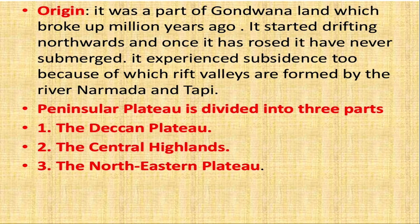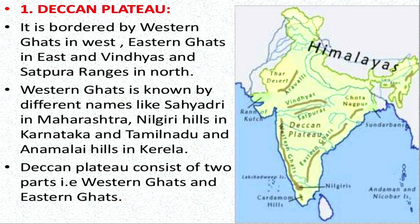This area, formed by magma, led to the formation of black soil, which is very rich in nutrients. That's why it is known for cotton cultivation and even sugarcane cultivation. The Peninsular Plateau has been divided into the Deccan Plateau, the Central Highland, and the North Eastern Plateau. The Deccan Plateau is bordered by Western Ghats in the west and Eastern Ghats in the east, with Vindhyas and Satpura Range in the north. Nilgiri Hills span Maharashtra, Karnataka, Tamil Nadu, and Annamalai Hills in Kerala.